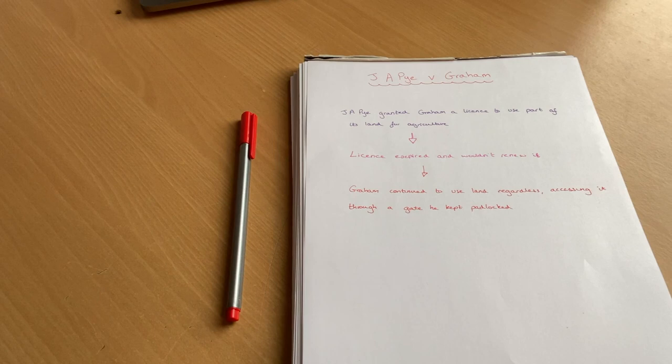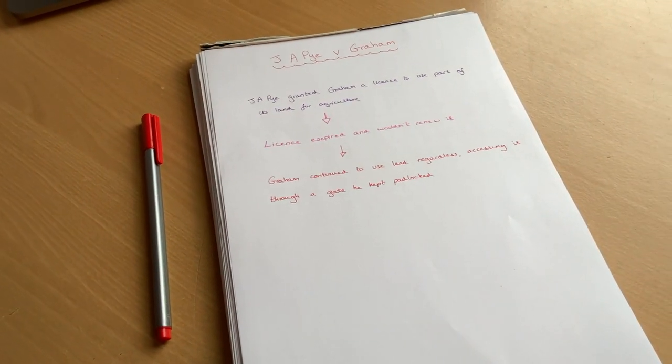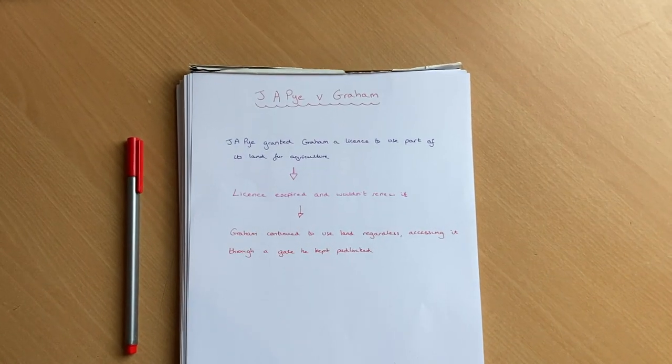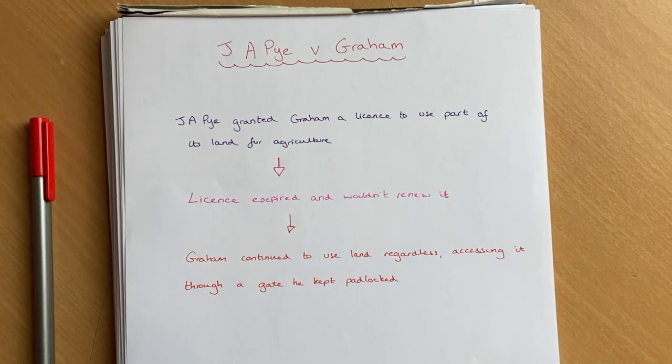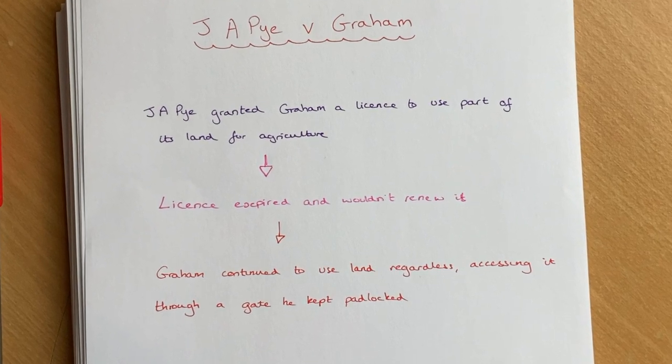To give you an example, here's how I use a fact flowchart for the case of JA Pye v Graham (2003). As you can see, the fact flowchart is very simple and follows events from start to finish in chronological order. It doesn't need to be detailed — just the key facts relevant to the case. When deciding whether a particular fact is legally relevant, my rule of thumb is to ask: would omitting that fact from the flowchart have altered the legal judgment? If yes, it's probably significant and should be kept. If its omission wouldn't have changed the outcome, it's probably not important and can be left aside.